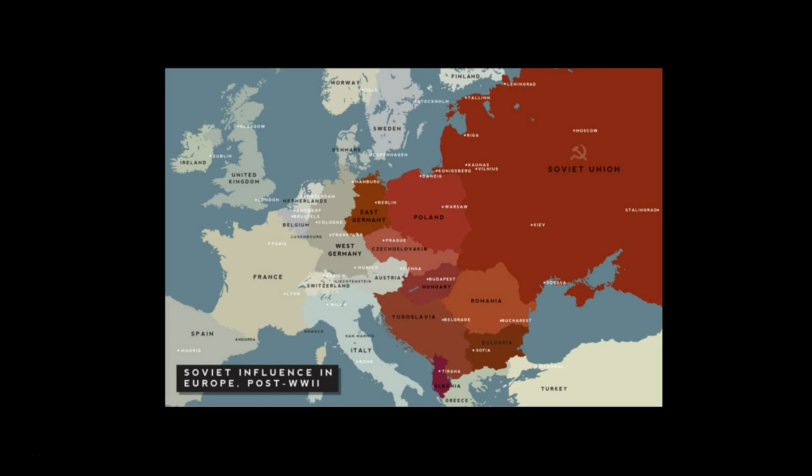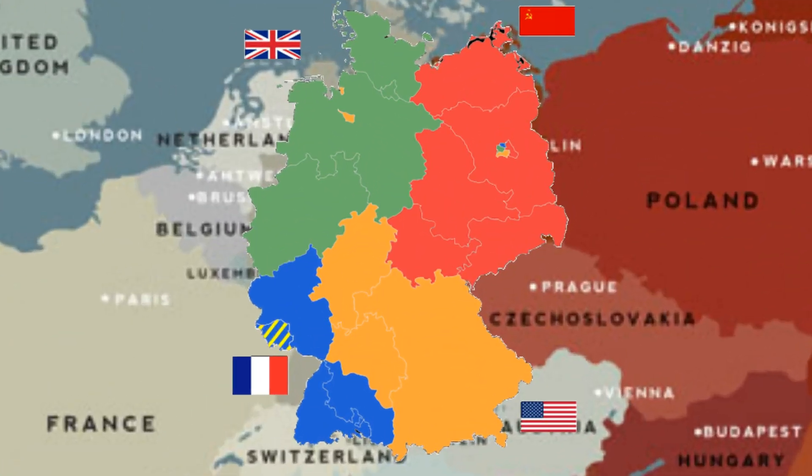As early as 1945, there were already signs of serious strain in the relationship between the United States and the Soviet Union, and it was unclear what would happen to the alliance once the war was over. The United States under President Franklin Roosevelt and then Harry S. Truman, and the USSR under Joseph Stalin, clashed over post-war policy in Europe and elsewhere. There was a particular conflict of interest over the fate of Germany, which proved to be irreconcilable, leading to the eventual division of the country into East and West Germany.